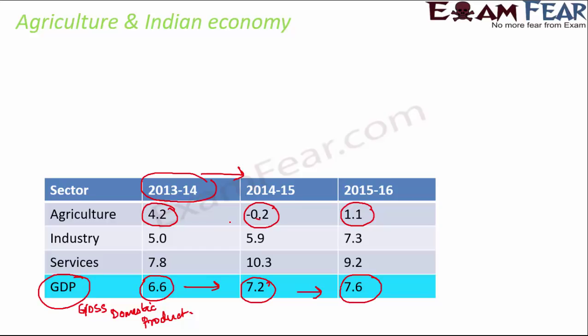Of course not, because agriculture is a sector where more than 80% of the Indian population is involved. Ideally, agriculture should contribute the maximum to the overall GDP of the Indian economy, but that is not happening, which shows that agriculture is in a very bad shape.